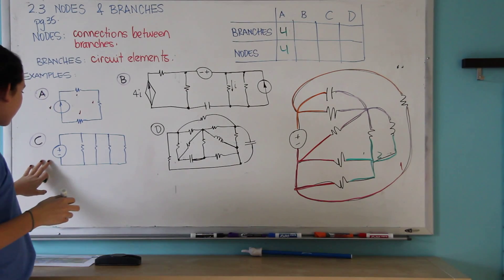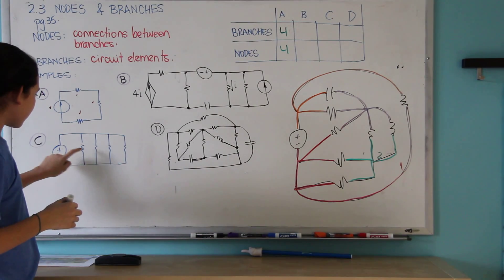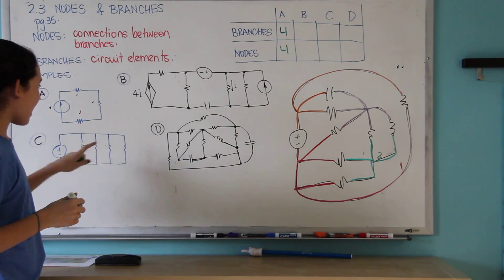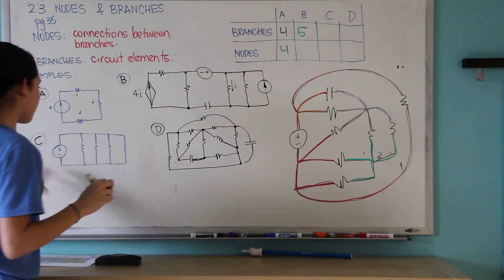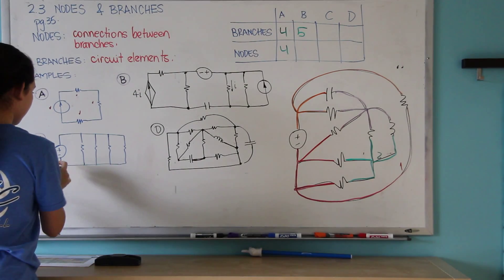And here you can see that it has one, two, three, four, five branches and two nodes.